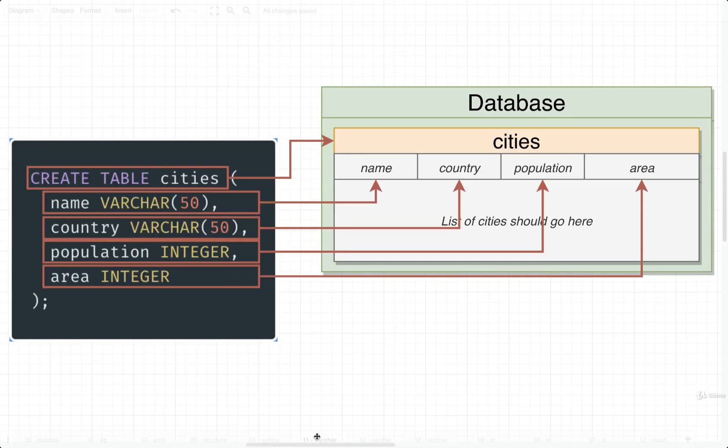Now out of this entire SQL statement, it went over a collection of different lines. Each line has a very distinct purpose to create this cities table. The very first line, create table cities, as you'd guess, creates the table itself. Then inside that set of parentheses, we listed out all the different columns that this table should contain.